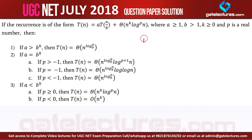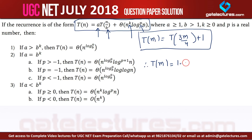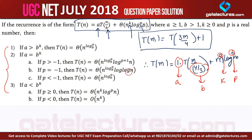Now using the master's theorem on the same problem T(m) = T(3m/4) + 1. We rewrite this in standard form as T(m) = 1·T(m / (4/3)) + n^0 · log^0 m. From this we identify: a = 1, b = 4/3, k = 0, and p = 0.